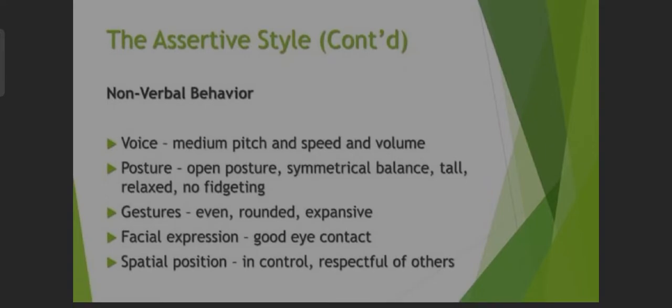The assertive style nonverbal behavior: Voice — medium pitch, speed, and volume. Posture — open posture, symmetrical balance, tall and relaxed, no fidgeting. Gestures — even, rounded, expressive. Facial expression — good eye contact. Spatial position — in control and respectful of others.